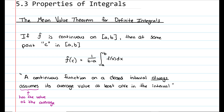A continuous function on a closed interval always assumes its average value at least once in the interval — meaning it takes on that value at some point. Just as the mean value theorem for derivatives states that on a closed interval there exists a c value such that f of c equals the average rate of change, with integrals there is a c value such that f of c equals the average of the area.